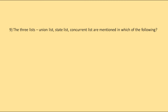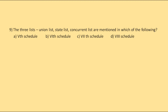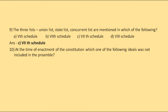The three lists — Union List, State List, and Concurrent List — are mentioned in which of the following schedules? The options are the 5th, 6th, 7th, or 8th schedule. The correct answer is the 7th Schedule, also known as the federal scheme.